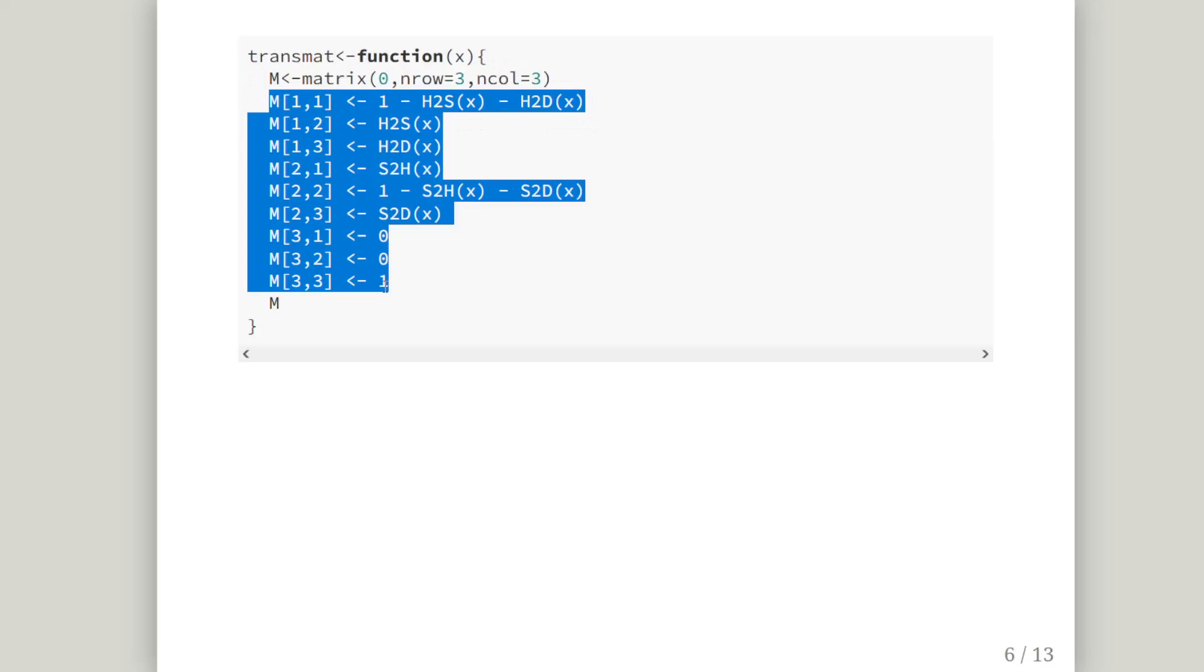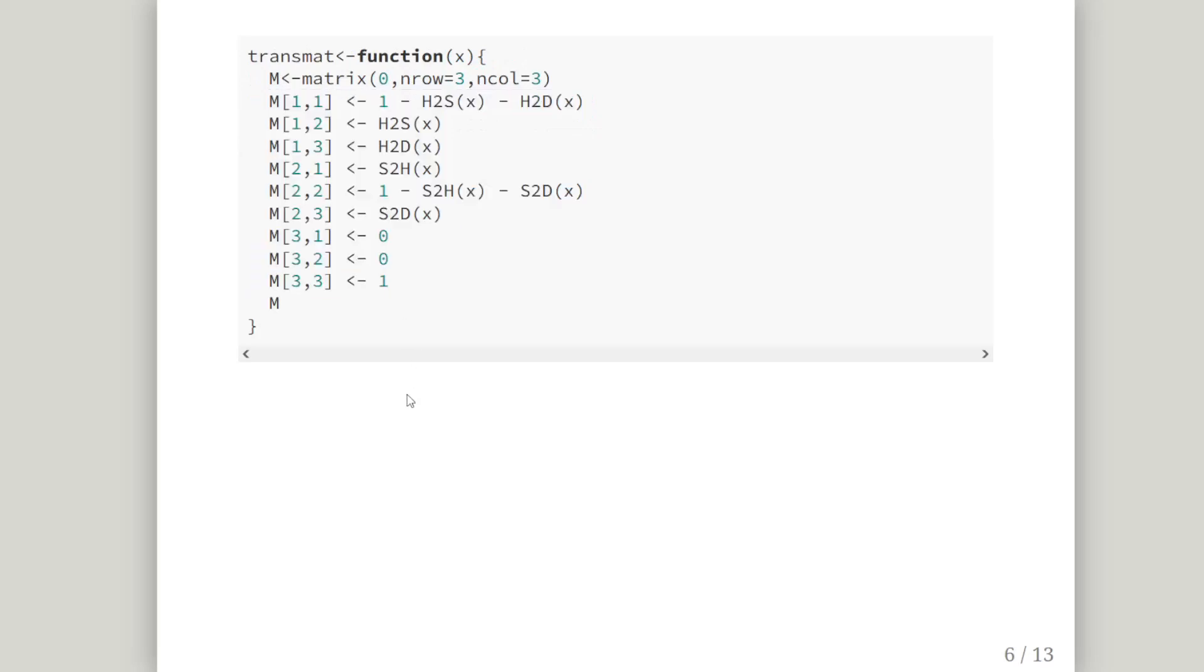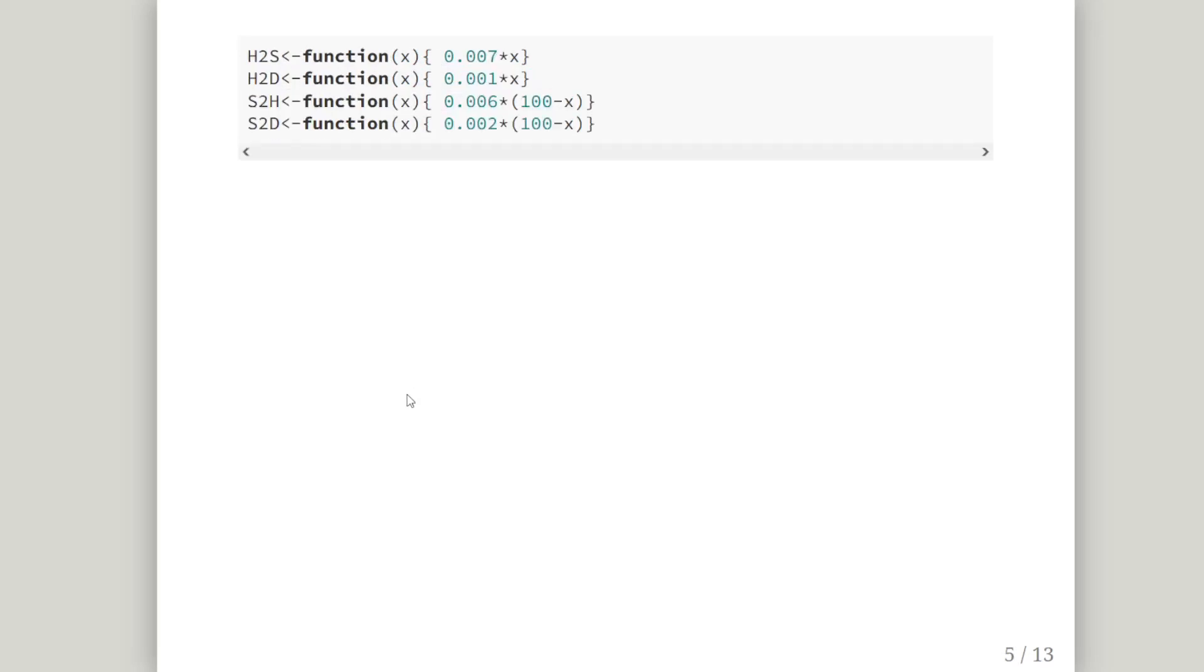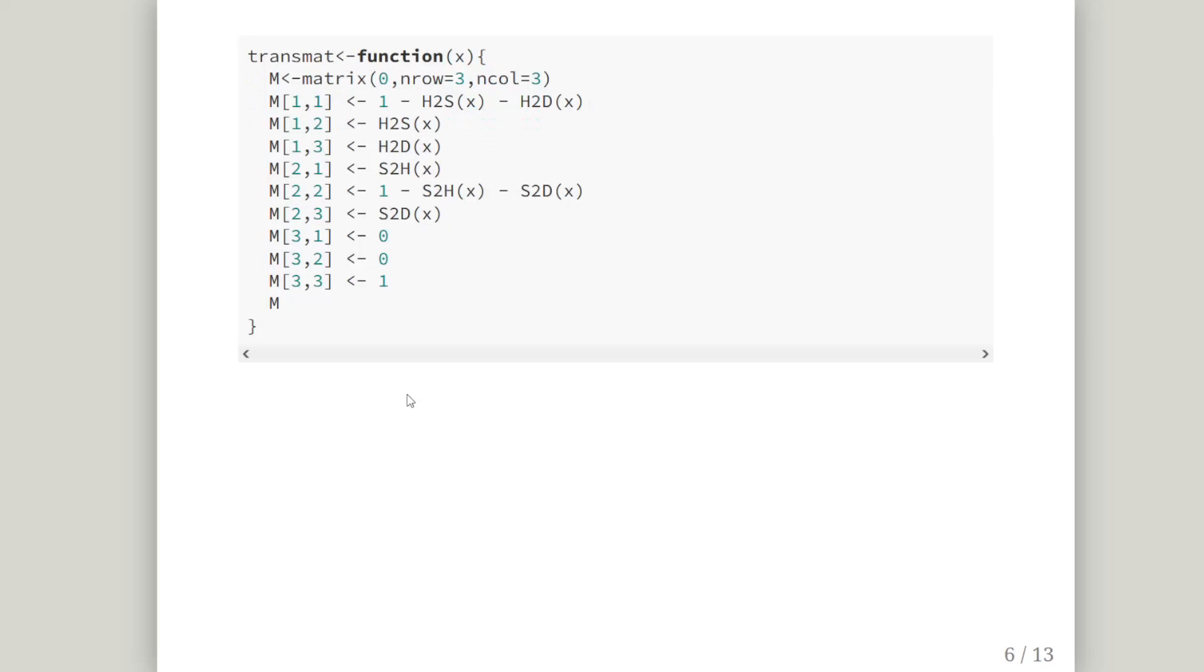I'll just go back here - essentially what I have done is use the functions I've created to populate the matrix and output a matrix m. So the input there is age x equals age, and that will calculate the proper transition matrix appropriate for that age.